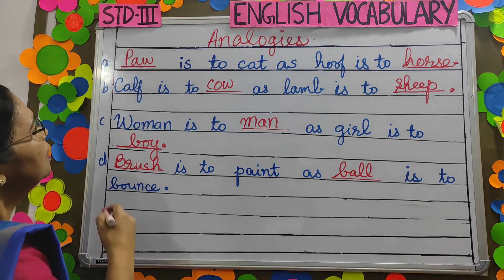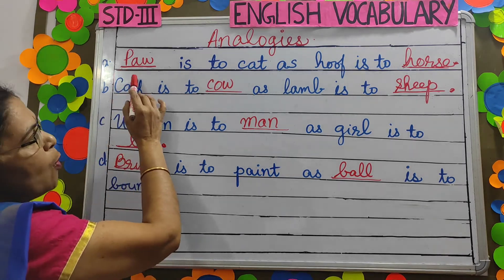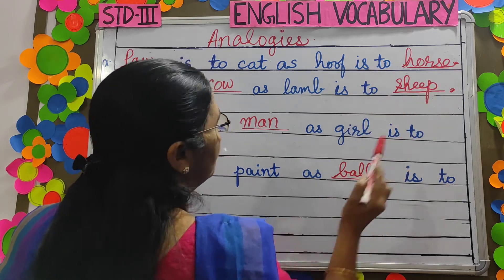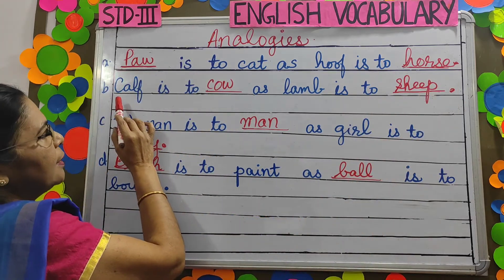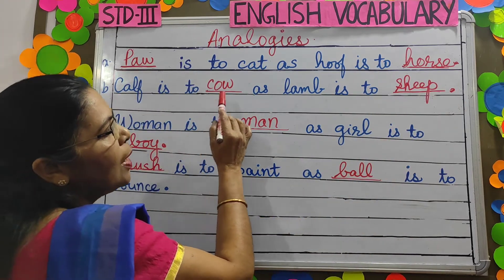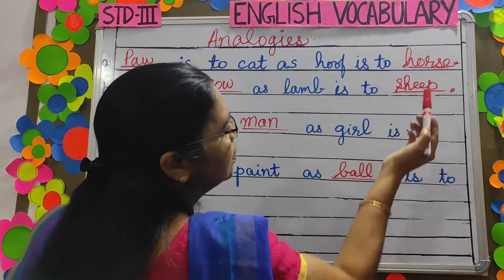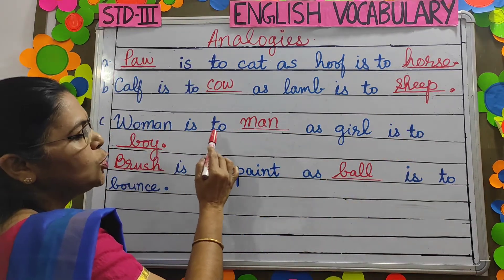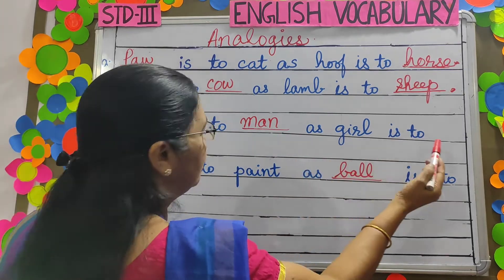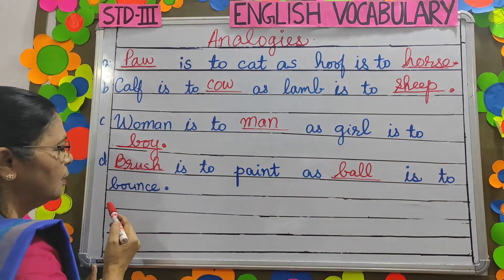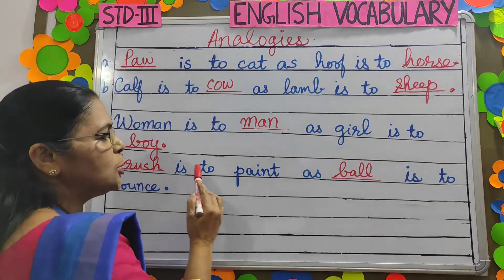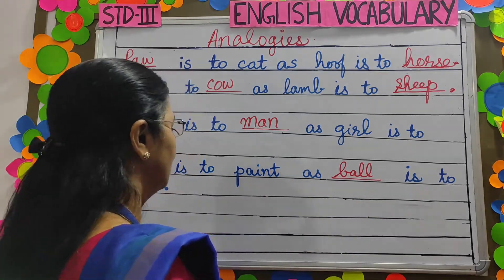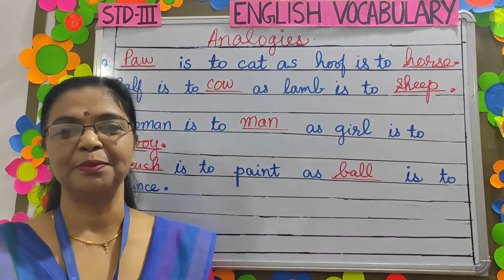Let's revise once more. Paw is to cat as hoof is to horse. Calf is to cow as lamb is to sheep. Woman is to man as girl is to boy. Brush is to paint as ball is to bounce.